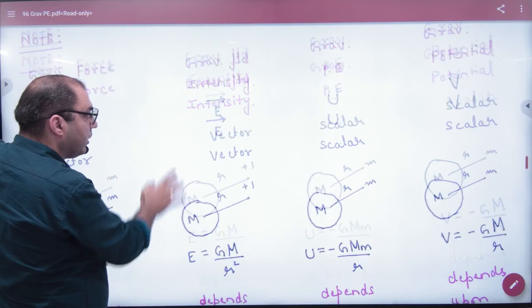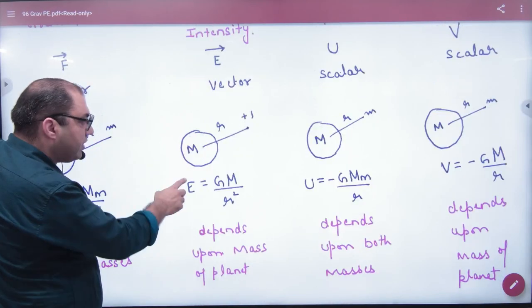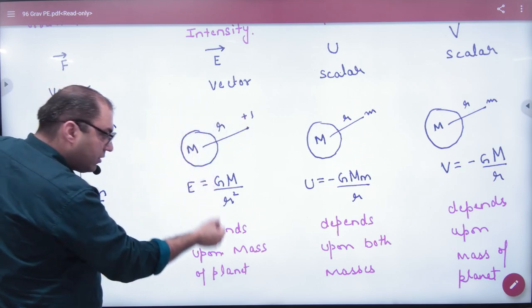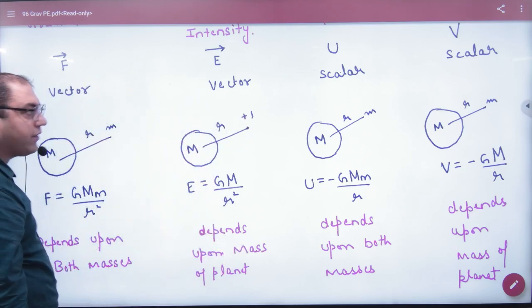Is formulae mein, dono masses ke upar, force depend kerti hai. Phir E ka formula, intensity ka formula, intensity ka formula, GM by r square. Ismein, yahan ka mass depend ni kerta, sirf planet ka mass depend kerta hai.